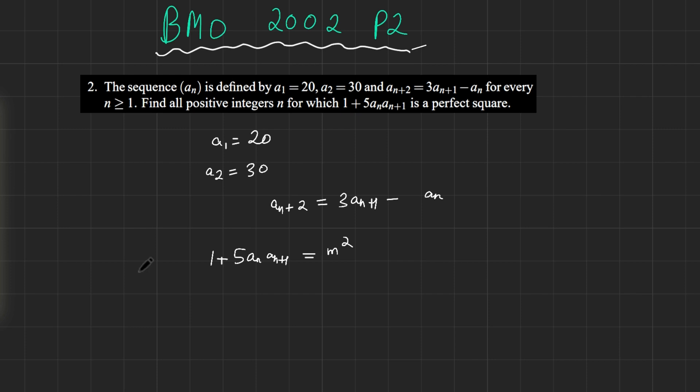Now that I hope you've given the problem a try, let's first try to delve into the number theory of it. As is typical in number theory, you should always try to factor stuff out. So rearranging this, we do get 5aₙ times aₙ₊₁ equals m² minus 1. m² minus 1 is obviously factored as (m+1)(m-1). And so you have an interesting factorization: (m+1)(m-1) equals 5aₙ times aₙ₊₁.